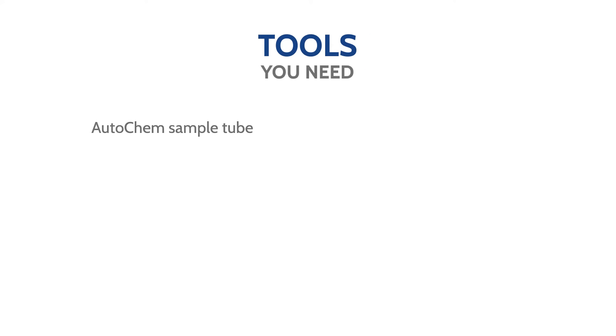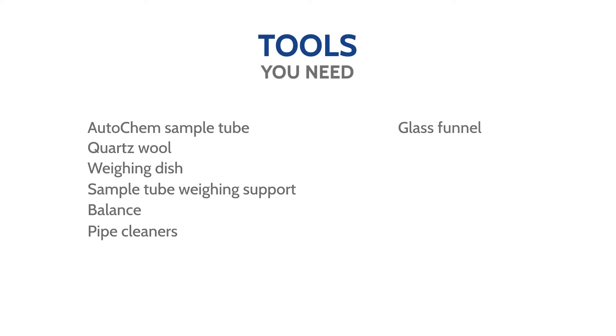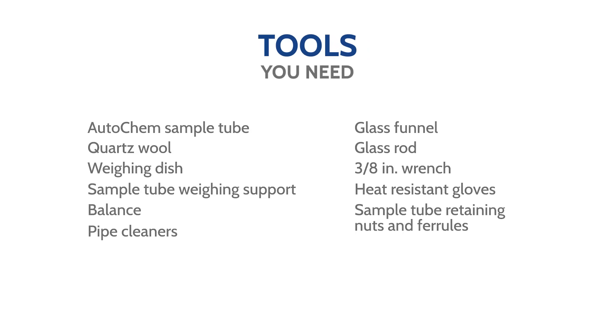The tools and materials you will need for sample preparation are an AutoChem sample tube, quartz wool, a weighing dish, a sample tube weighing support, a balance, pipe cleaners, a glass funnel, a glass rod, a 3/8 inch wrench, a pair of heat-resistant gloves, sample tube retaining nuts and ferrules, and CalRes O-rings size 9 and 13.